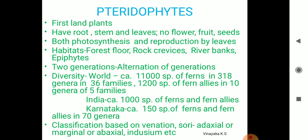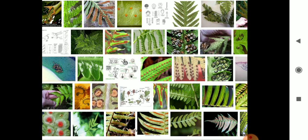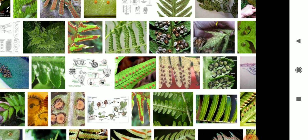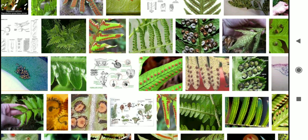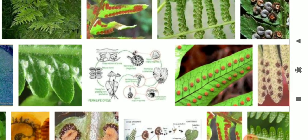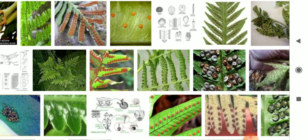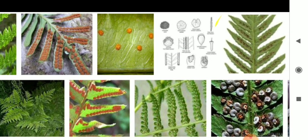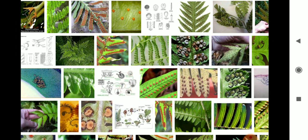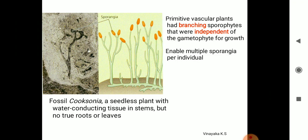Classification is based on the adaxial surface, abaxial surface, margin, or induced condition — this is where the sori can be found on both sides, in a specific region, or in particular localities of the leaf surfaces. Each pteridophyte has a different soral arrangement. The sporangia is the spore-bearing structure.